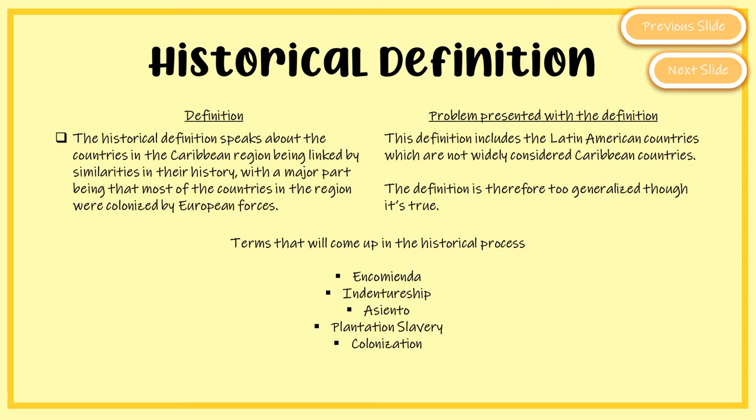For example, the Spanish were in Jamaica first around 1494, then the English took over in 1655. The problem with the historical definition is that even though it includes a country like Bermuda sitting in the Atlantic as Caribbean, it also includes Latin American countries not widely considered Caribbean — such as Colombia and Venezuela, which were controlled by the Spanish. This definition is therefore too generalized.